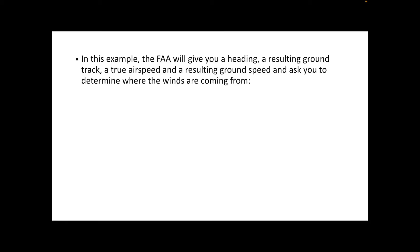In this video I want to talk about an example from an FAA written test question on E6B that is a little bit tricky. Usually with an E6B problem, you're given the winds and then you find a wind correction angle and a ground speed. But this question is tricky because they're asking for the wind, so we're going to have to work backwards on our E6B.